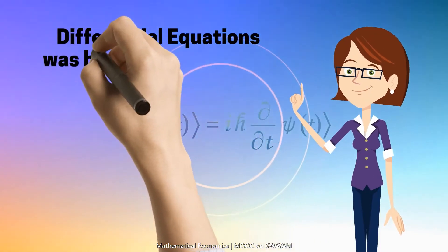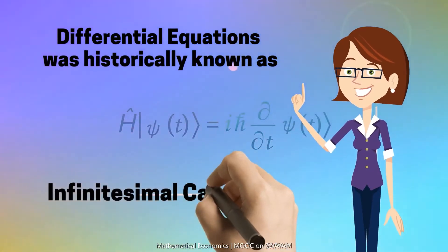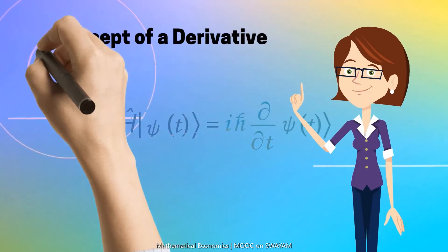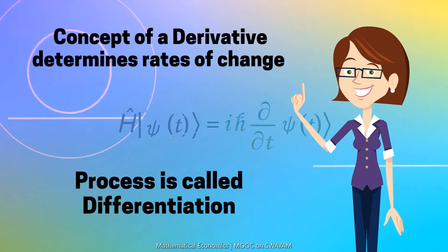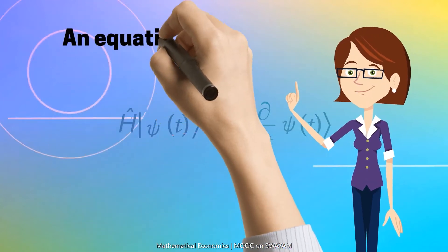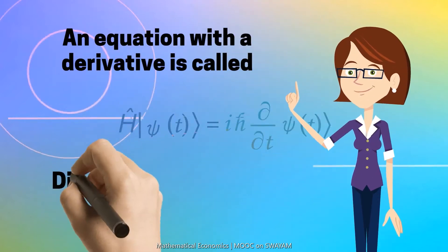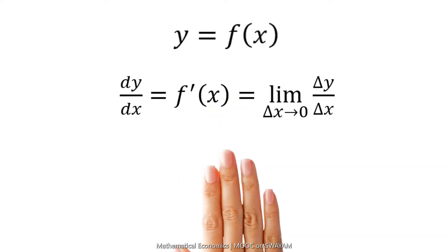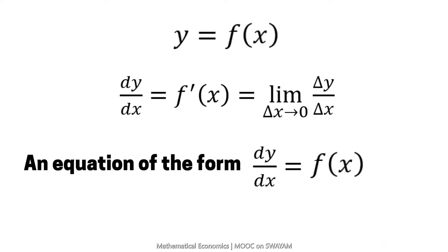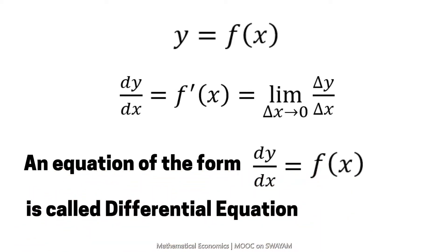Differential equations were historically known as infinitesimal calculus. If you recall, the concept of derivative is used to determine the rates of change of variables, and the process of finding the derivative is called differentiation. If you see an equation with a derivative, that equation is termed a differential equation. Consider the usual function y = f(x). The derivative is given by dy/dx or f'(x). If we have an equation of the form dy/dx = f(x), this equation has a derivative and therefore is called a differential equation. The difference with a simple equation is that instead of a dependent variable y, a differential equation has the derivative dy/dx.